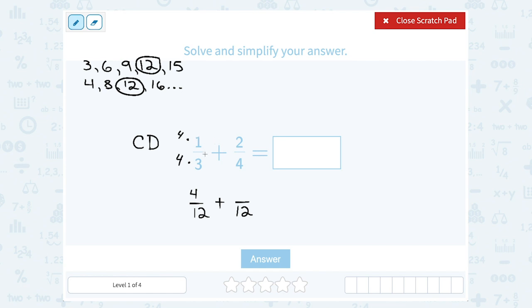So that means 1 out of 3 and 4 out of 12 have the same value. I'm just writing it in a different way.